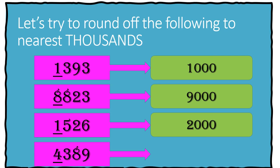Lastly, if we have 4,389 rounded off to the nearest thousands, it will give us 4,000.